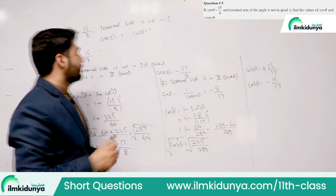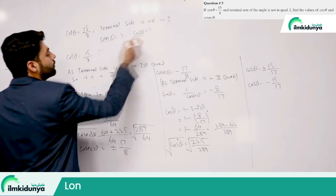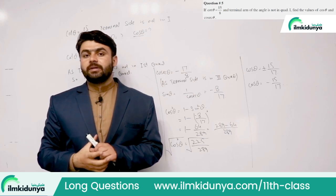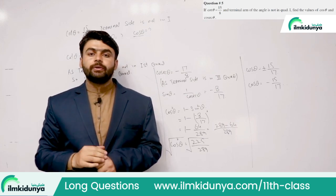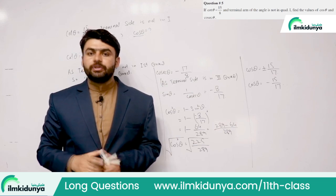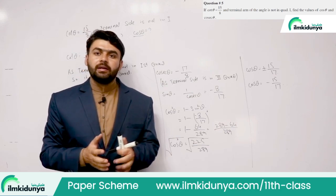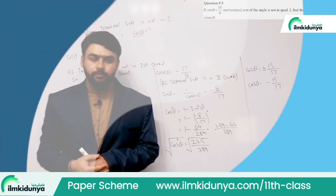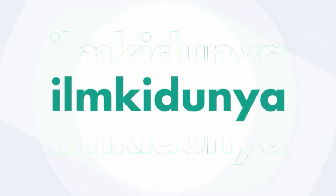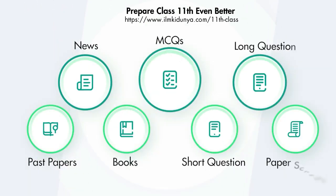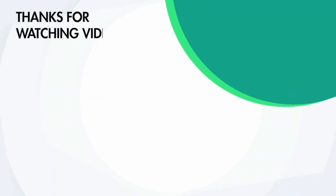Our two required values are complete. We've found cot and the remaining functions. That completes 9.2 section 5. If you have any issues with the theory, you can watch the video again or contact for help. Thank you.